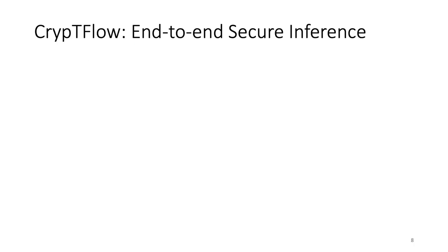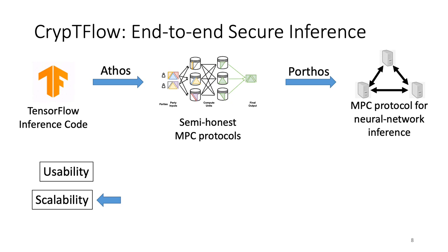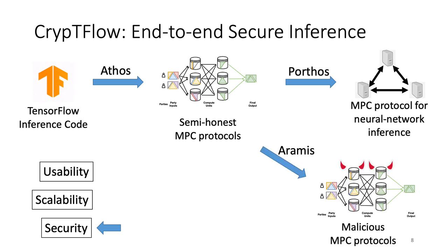This is exactly what we achieve with Cryptflow, an end-to-end system for secure machine learning inference. To tackle problems along the three dimensions, Cryptflow provides three components. For usability, Cryptflow provides Athos, a compiler from TensorFlow inference code to semi-honest MPC protocols. For scalability, Cryptflow provides Porthos, an MPC protocol geared towards neural network inference applications. For security, Cryptflow provides RMS, a general technique for converting any semi-honest MPC protocol to a maliciously secure protocol, assuming a secure hardware that provides integrity guarantees.